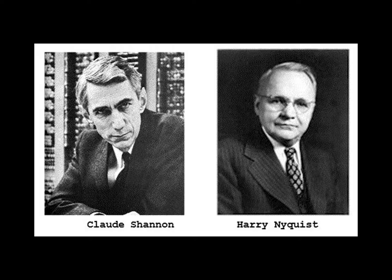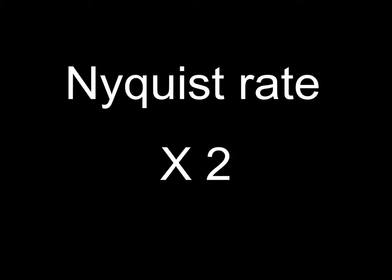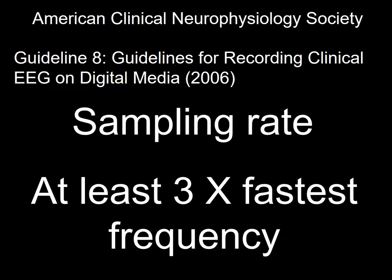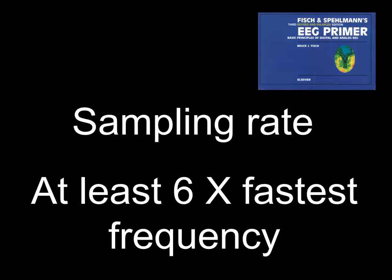The two gentlemen in this photograph were great mathematicians, both having a lot to do — perhaps indirectly — with digital EEG. The one most recognized is probably Dr. Nyquist. He is recognized for saying that in order to faithfully reproduce a rhythm, we need to sample it at least twice the frequency of the fastest rhythm constituting it. The 2006 recommendation from the American Clinical Neurophysiology Society is to use a sampling rate of at least three times the fastest component of the rhythm. Yet today, we say that probably a good sampling rate is six times the fastest rhythm we want to capture.